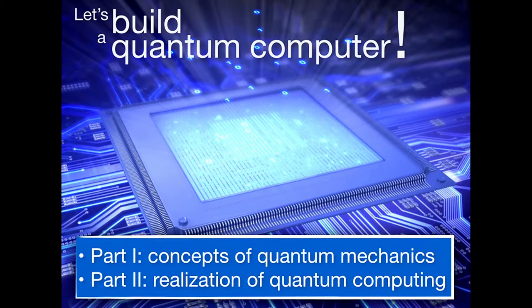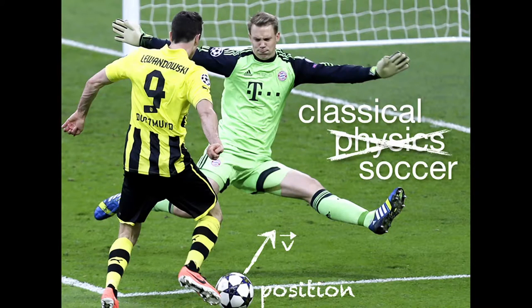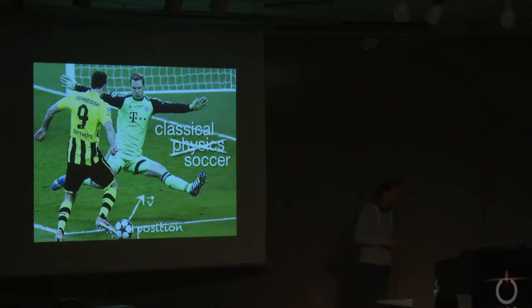My presentation is in two parts. The first part covers the basic concepts of quantum mechanics, but there won't be any equations — I will stick to pictures and nice metaphors. Part two will cover a real realization of quantum computers and how we try to do this with diamonds. I promised you pictures, so we start with this one: Manuel Neuer.